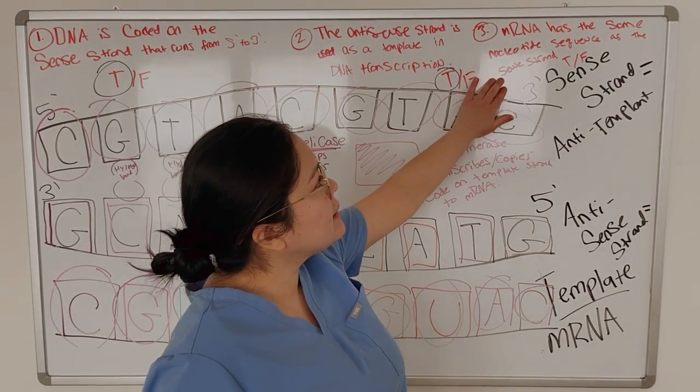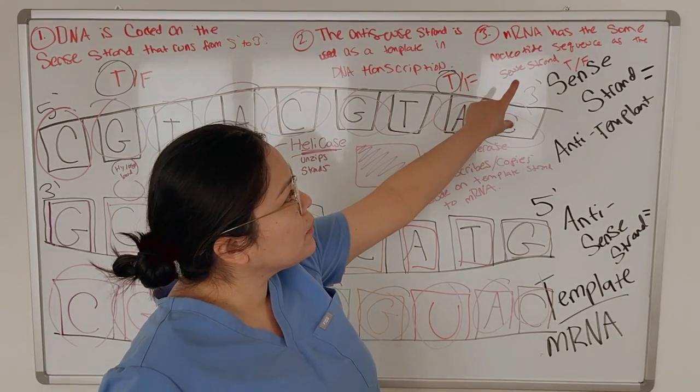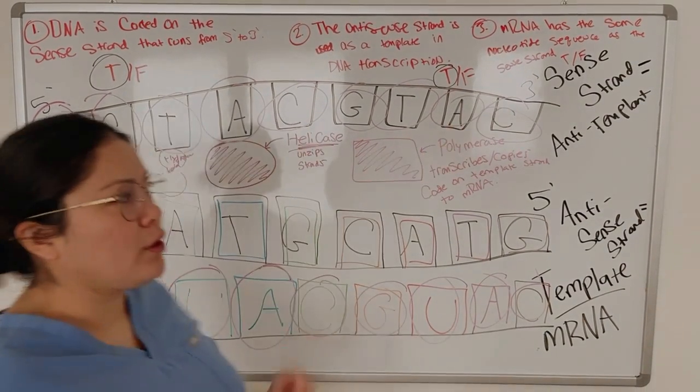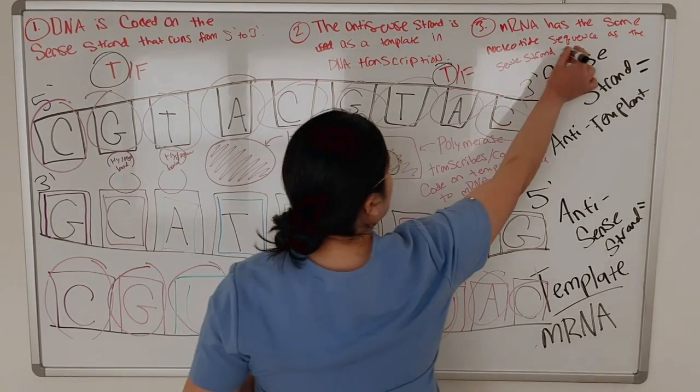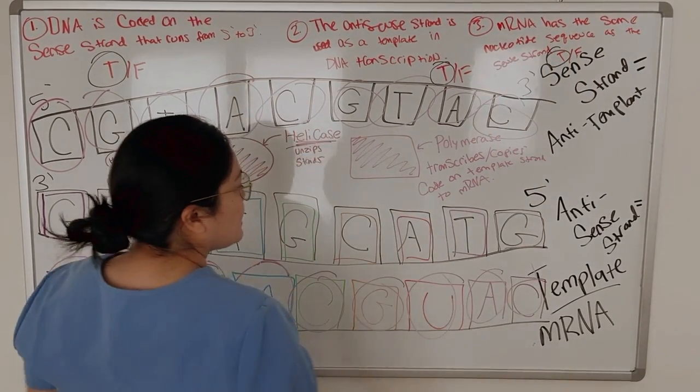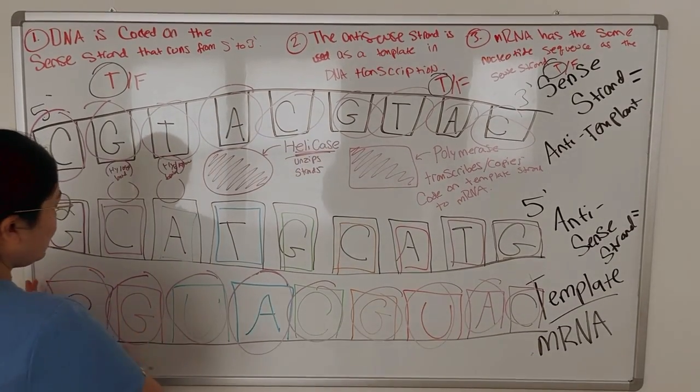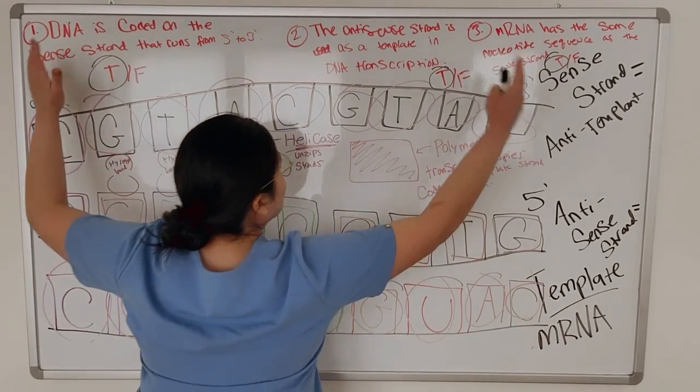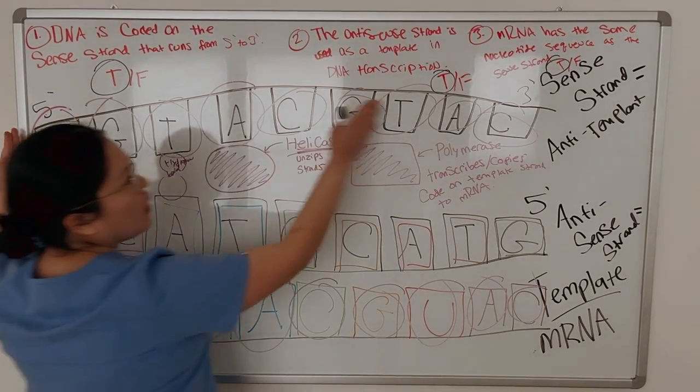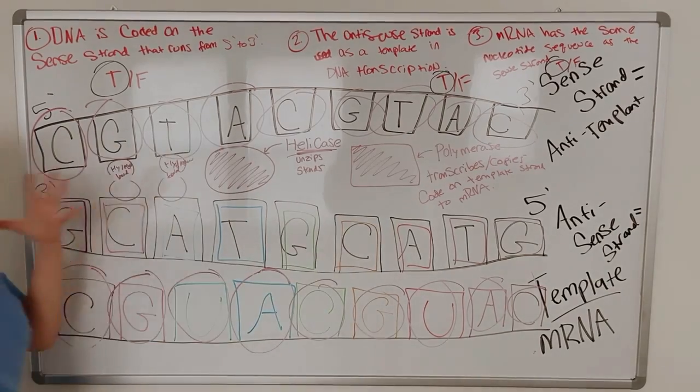Number three, mRNA has the same nucleotide sequence as the sense strand. True or false? This is true. All that means is that this nucleotide sequence here on mRNA is the exact same thing as the sequence on the sense strand.